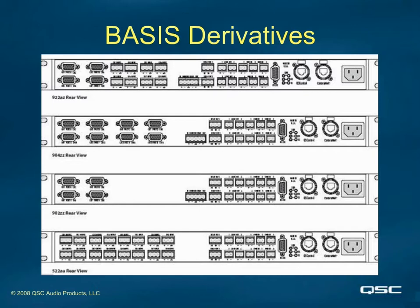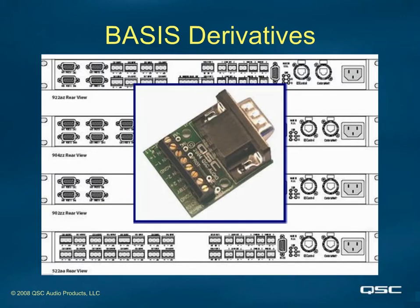The middle two units have no analog inputs at all. Their data port outputs are being fed by CobraNet audio only, being received via the CobraNet connector on the far right. We also have a special adapter available called the DDI11, which stands for Direct Data Port Interface Model 11, which can be attached to the data port to pull out the audio signals for some other amp or audio device.